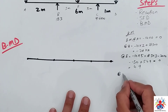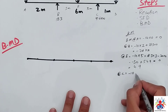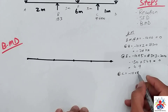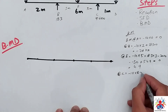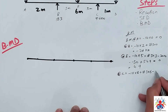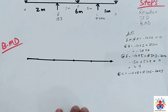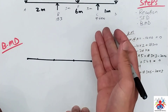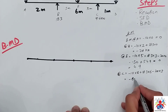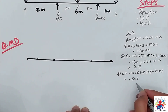Bending moment at point C: minus 10 multiplied by 8, plus 18.3 multiplied by 6, minus 20 multiplied by 3, and 41.6 multiplied by 0 (no arm at C, so omitted). That gives minus 80 plus 109, so the bending moment at C equals 29. Now based on these numbers we will draw the bending moment diagram.